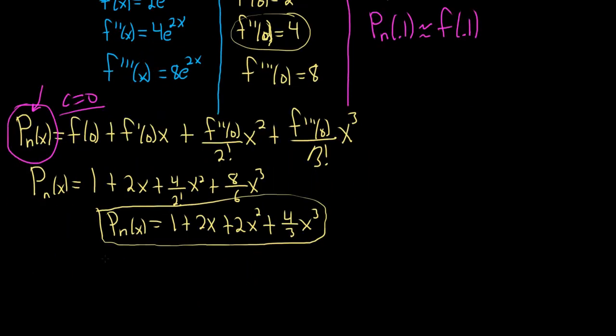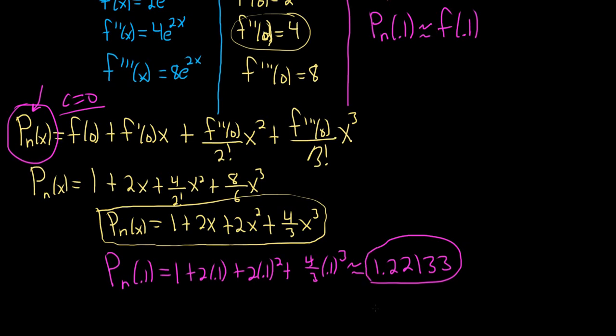So to find p sub n of 0.1, all we do is plug it in. So this is 1 plus 2 times 0.1 plus 2 times 0.1 squared plus 4 thirds times 0.1 cubed. And I'm just going to briefly type this into my calculator. So it's 1 plus 2 times 0.1 plus 2 times 0.1 squared plus 4 thirds times 0.1 cubed. I got 1.221 and it's got a bunch of 3s. I'll put two 3s, and it keeps going forever with the 3s. So that's the answer. That's the approximation of f of 0.1.